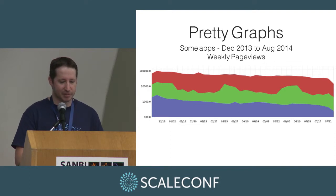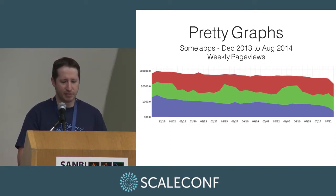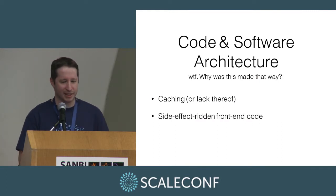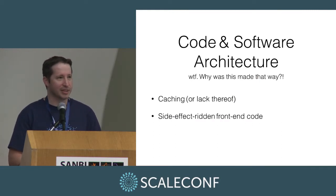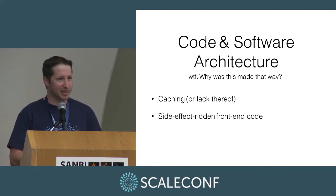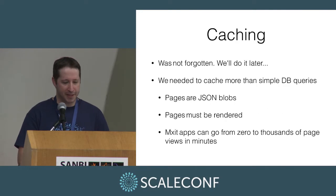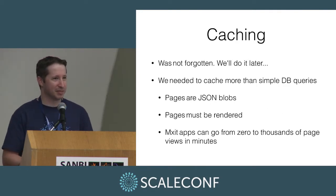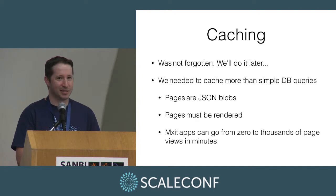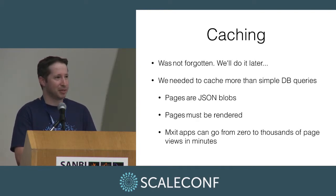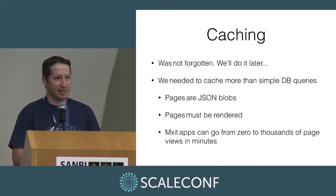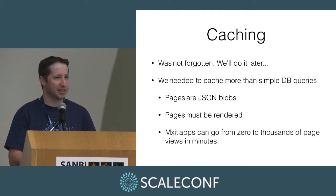Let's go into some examples of where things have gone wrong. The first one is caching, and the second is some interesting front-end stuff that caught us off guard. Caching wasn't forgotten — we'll do it later. Launch started off as a prototype, developed very quickly, with no caching — everything just read out of the database. We realized very soon that we needed to get some caching involved.